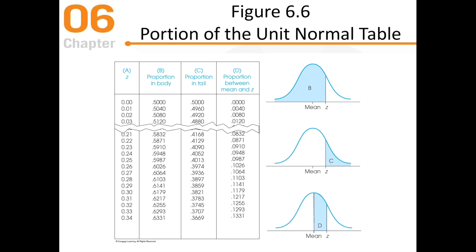The unit normal table has several columns. Column A is your z-score. For example, a z-score of 0.24 gives a proportion in the body of 0.5948 — around 60% — and a proportion in the tail of 0.4052. Column D is the proportion between the mean and the z. When thinking about tail and body: the bulk of the distribution is the body, and the small part on the side is the tail. Anything on the right side of the mean is a positive z-score, giving a smaller tail and larger body.